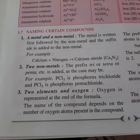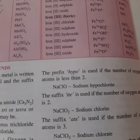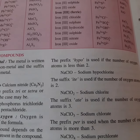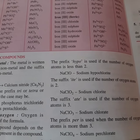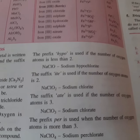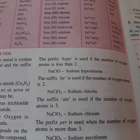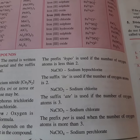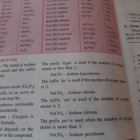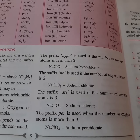Now there are certain compounds where two elements and oxygen are present; oxygen is represented at the end of the formula. The name of the compound depends upon the number of oxygen atoms present. The prefix hypo- is used if the number of oxygen atoms is one — for example, sodium, chlorine, and oxygen together gives sodium hypochlorite. The suffix -ITE is used if the number of oxygen atoms is two: NaClO2 is sodium chlorite. The suffix -ATE is used if the number of oxygen atoms is three: NaClO3 is sodium chlorate.